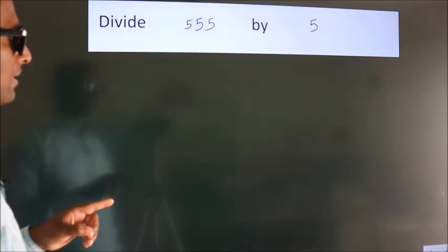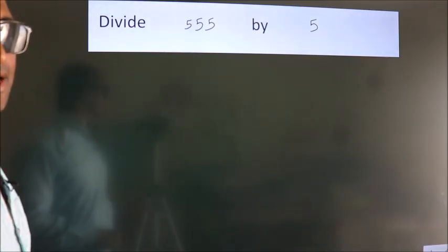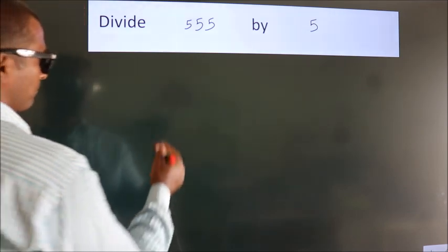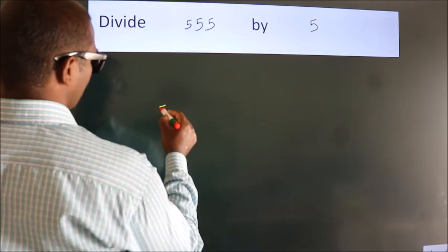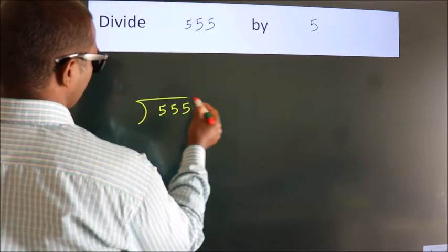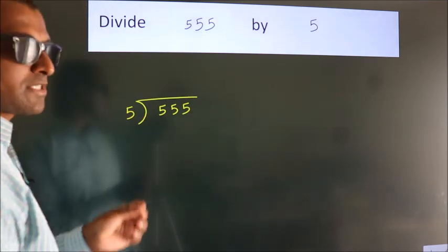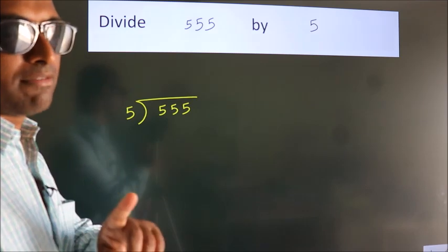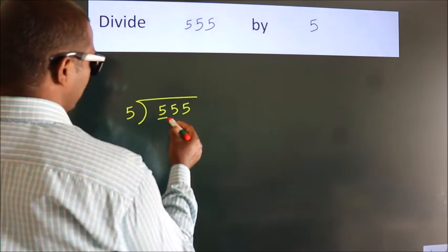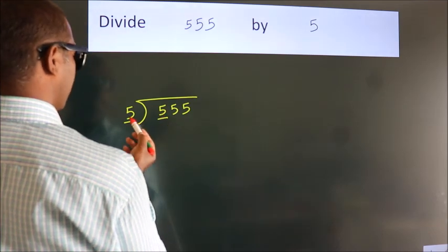To divide 555 by 5, we frame it with 555 inside the division bracket and 5 outside. This is step one. We look at the first digit: 5. When do we get 5 in the five times table? Five once is five.